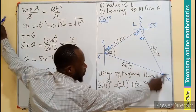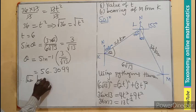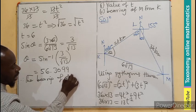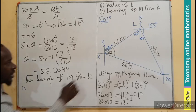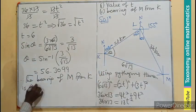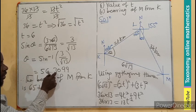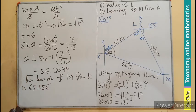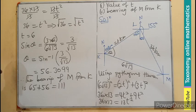our target is on the bearing of M from K. So therefore, the bearing of M from K is going to be 65 plus, we are looking for the answer to be the nearest whole number. So I can approximate here to have 56. And if I add that,